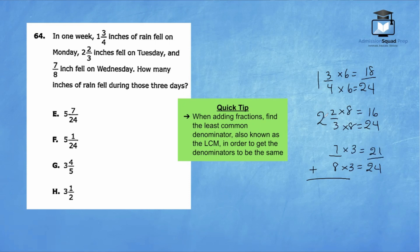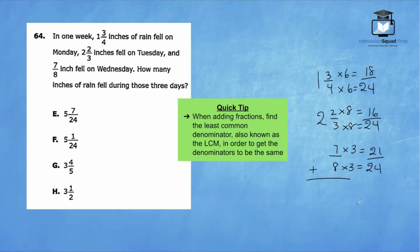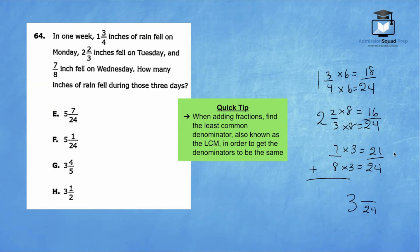Let's add our whole numbers: one plus two is three. Since all the fractions have the same denominator of 24, we keep that denominator and add the numerators. 18 plus 16 plus 21 equals 55. So we have three and 55 over 24.